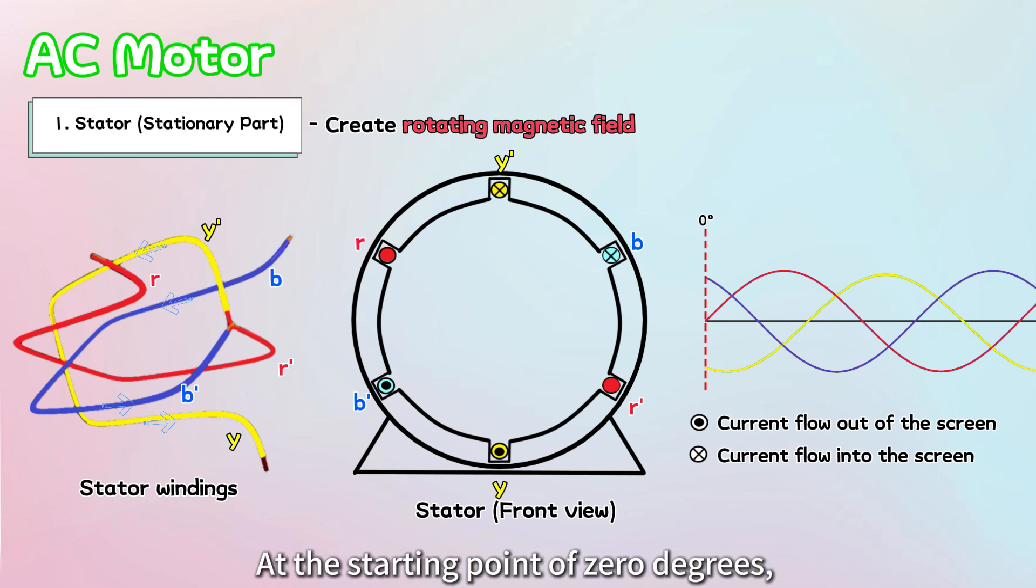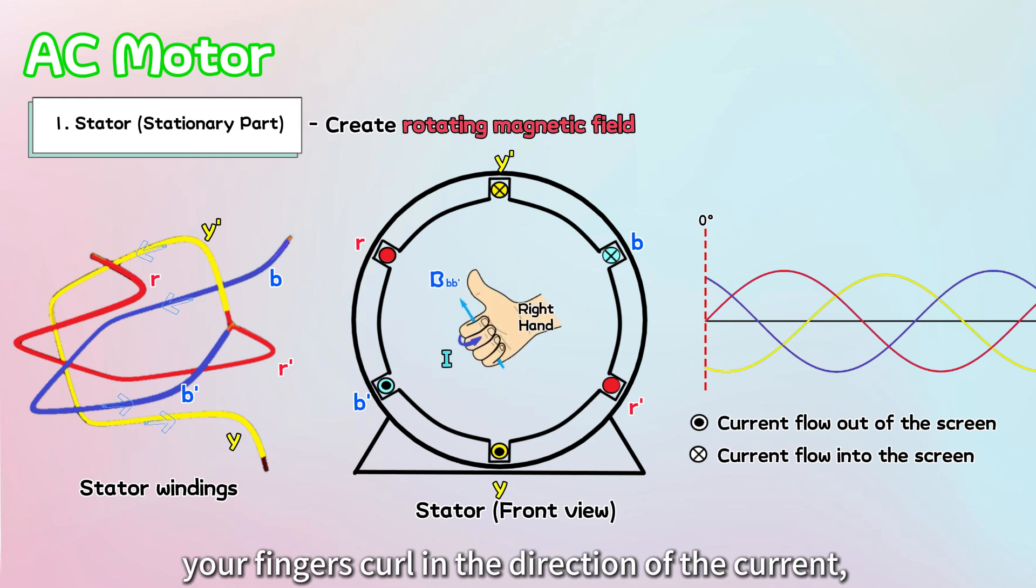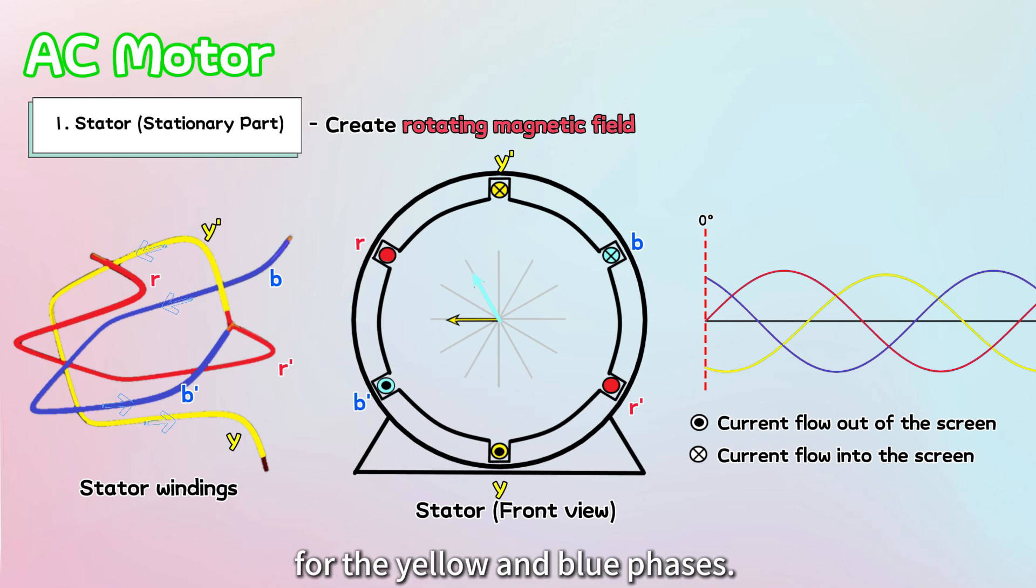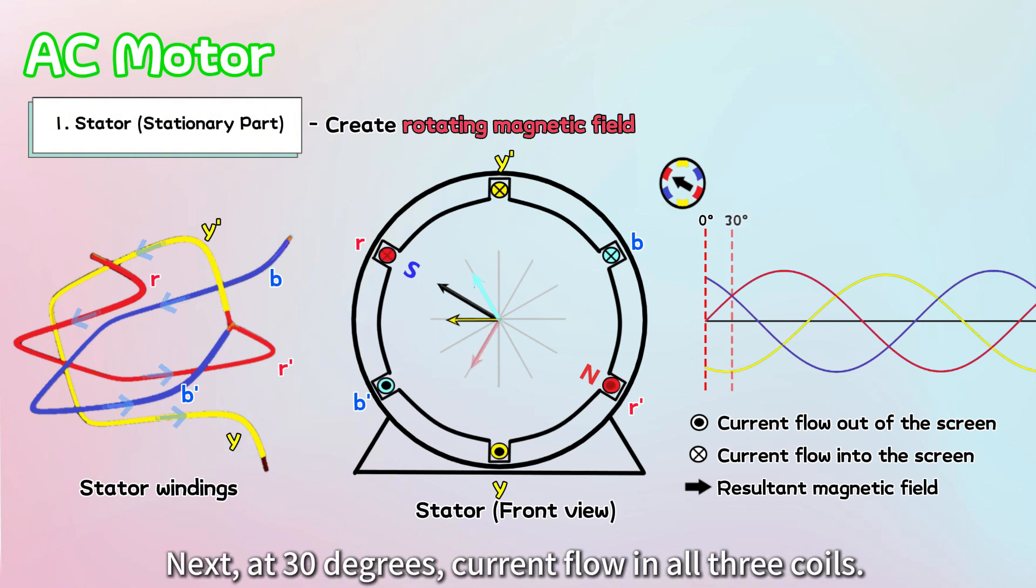At the starting point of 0 degrees, the red phase carries 0 current, while the yellow and blue phases have current flowing in opposite directions. The positive current in the blue phase flows into B and out of B', while the negative current in the yellow phase flows into Y' and out of Y. By applying the right-hand grip rule, where your fingers curl in the direction of the current, we can determine the direction of the magnetic fields for the yellow and blue phases. These magnetic fields combine to create a resultant magnetic field.